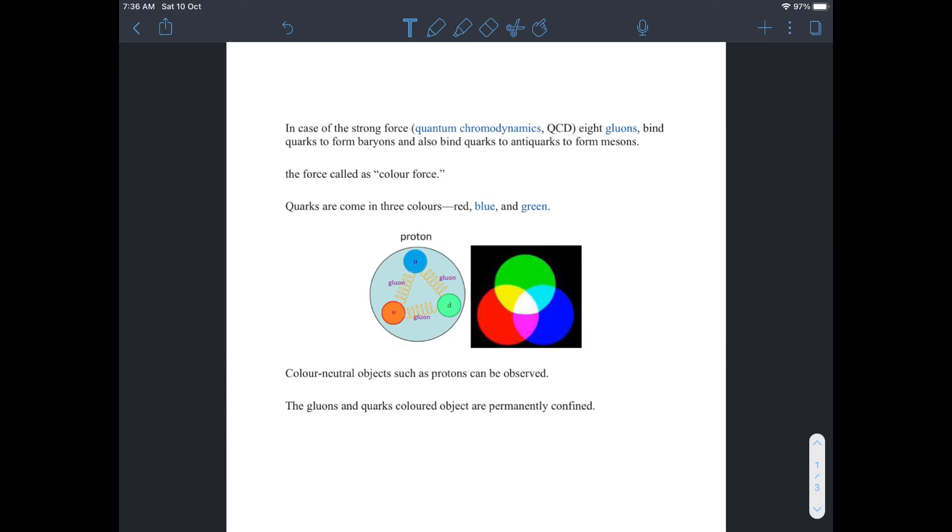The force is called color force. The quarks come in three colors: red, blue, green. Color neutral objects such as protons are observed. Gluons and quarks, colored objects, are permanently confined.